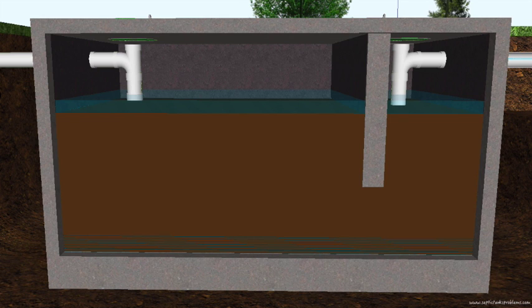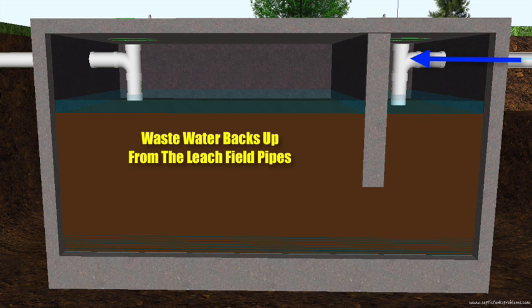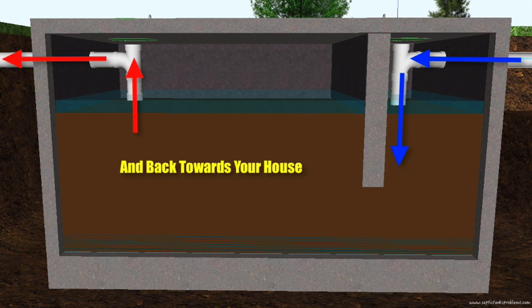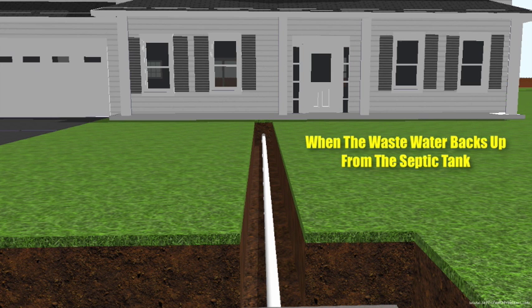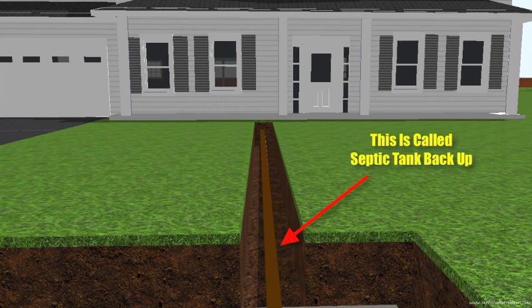So what is septic system failure? Once the drain field pipes become clogged with sludge, the wastewater from the drain field makes its way back down the pipes into the septic tank. From the septic tank, the wastewater backs up toward your house, and then backs up into the kitchen, into the yard, into the bathtub or laundry. This is called septic system failure.